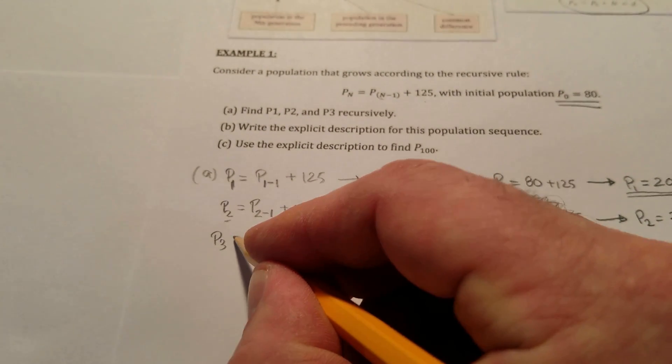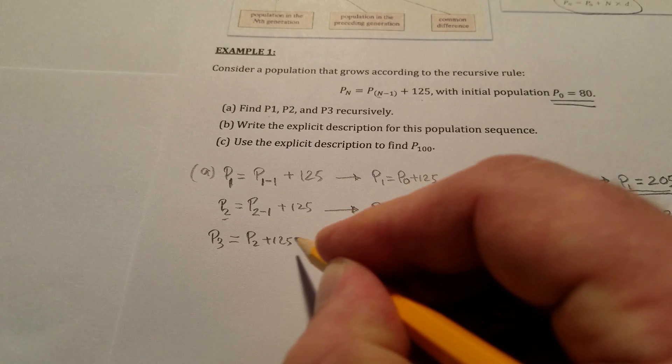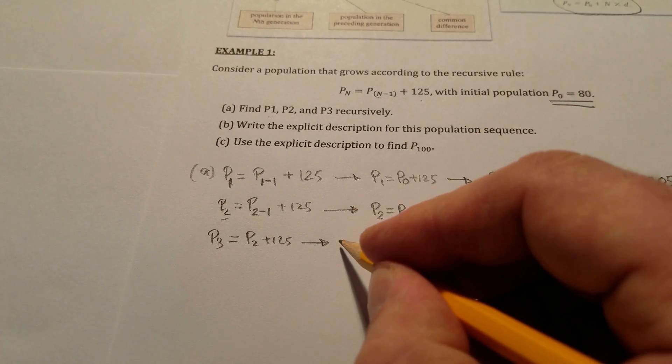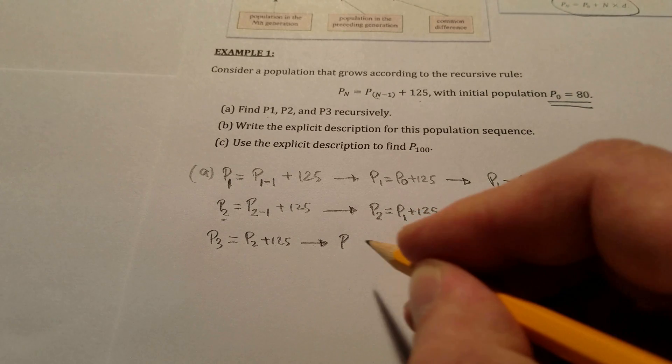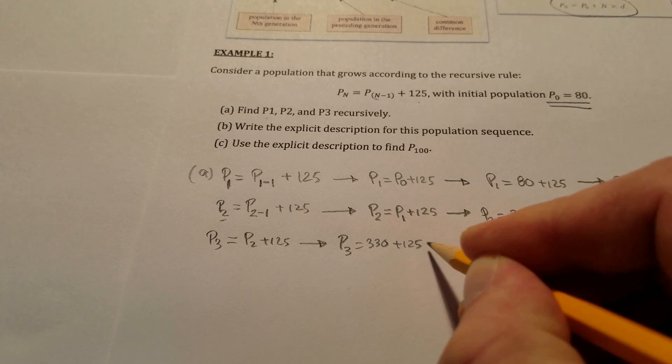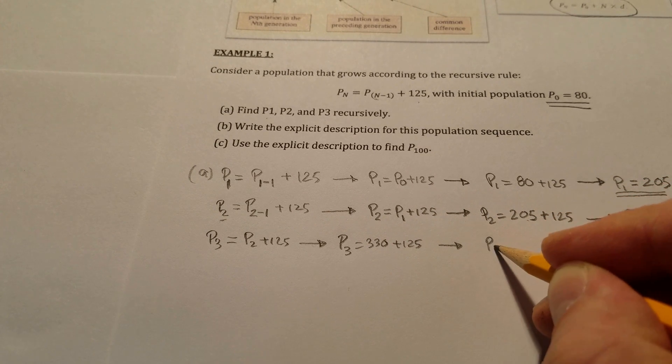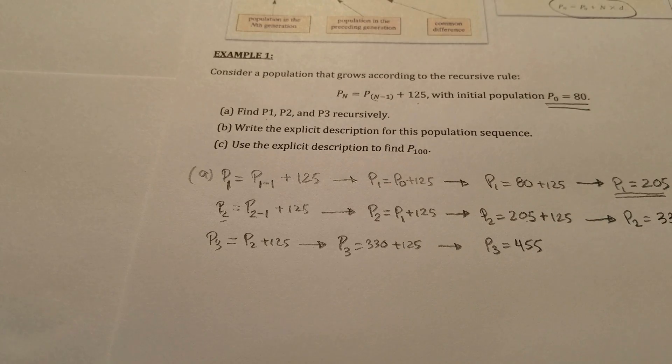Similarly, we can do the same thing for subsequent populations, and we can start to do this more streamlined. And we've completed part A.